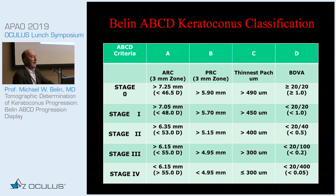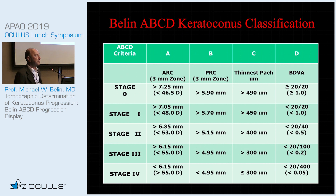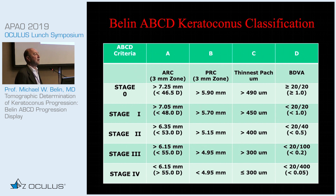Additionally, Amsler-Krumeich was based on apical readings. We know that in keratoconic corneas, the apex is not the thinnest point and apical keratometry readings don't represent the actual steepness of the cornea. So the ABCD classification looked at the anterior surface — the A parameter — and the B parameter, posterior surface or back, looking at a 3 mm optical zone centered on the thinnest point of the cornea, not an apical reading.